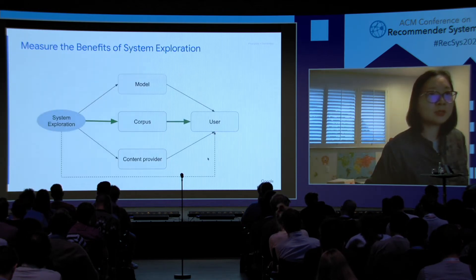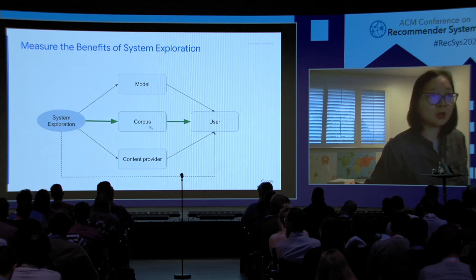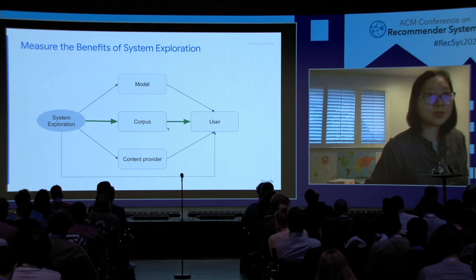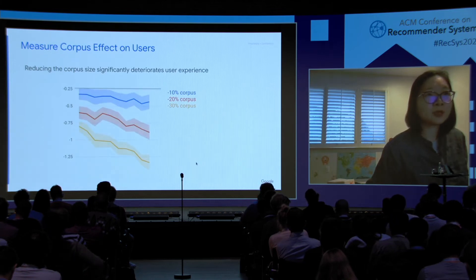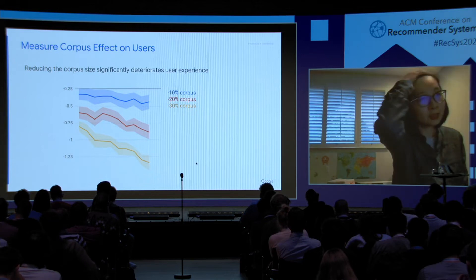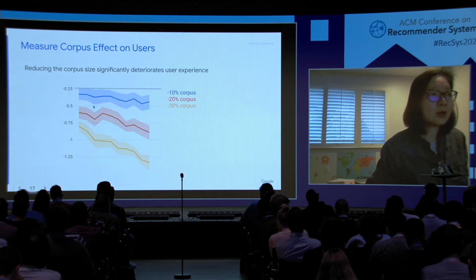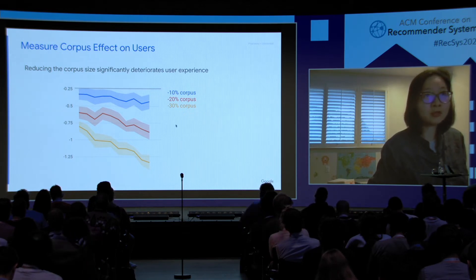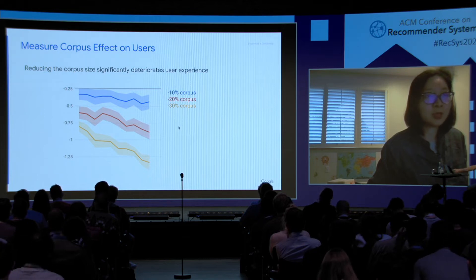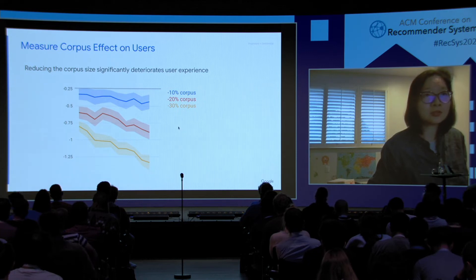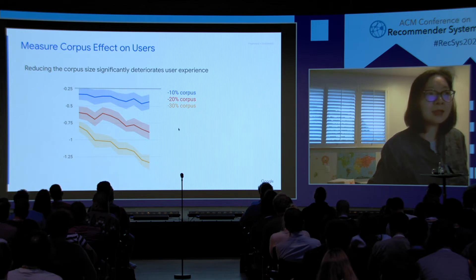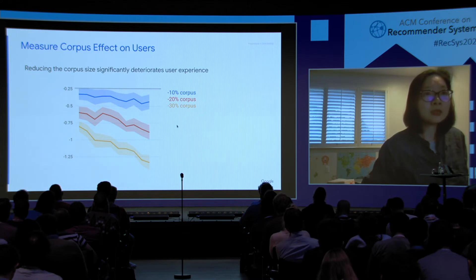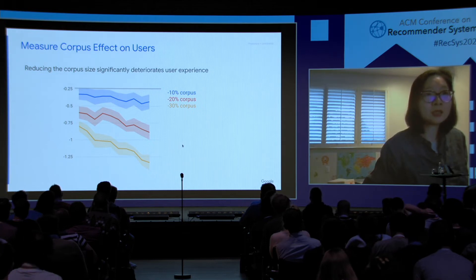To connect the full story — that system exploration can enlarge the corpus, and a larger corpus can help user experience — we conducted an experiment where we actually reduced the corpus size. The blue curve shows that we reduced the corpus users have access to from 100% to 90%, meaning 10% of the corpus is randomly filtered out for each user in the experiment group. We can see that user experience degenerates significantly and gets worse and worse during the experiment phase. From these results, we hypothesize that if we increase the corpus size, user experience will hopefully improve.